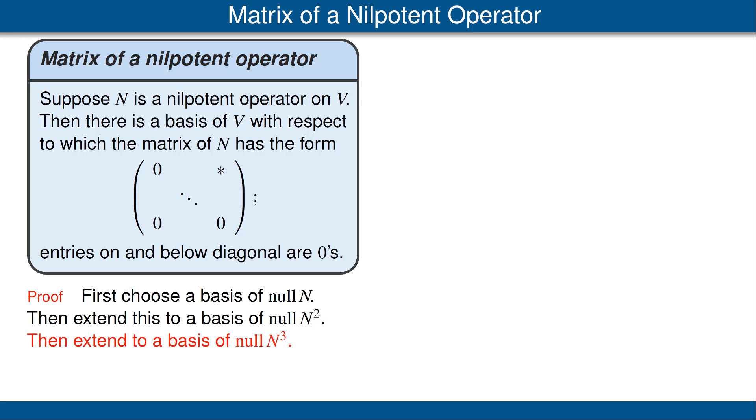The null space of N squared is contained in the null space of N cubed, so extend our previous basis to a basis of the null space of N cubed. Continue in this fashion eventually getting a basis of V, and that happens because the null space of N to the dimension of V is the whole space V.